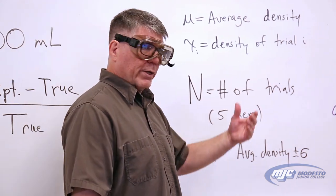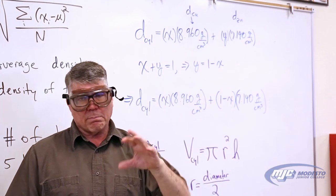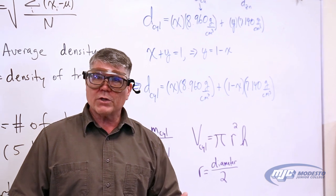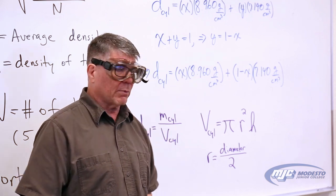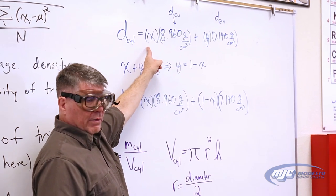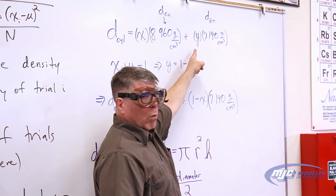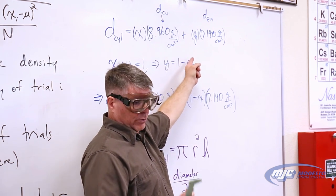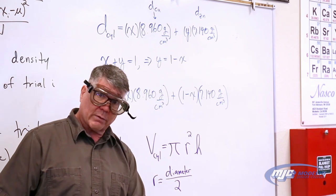If we look at these equations, the density of a mixture is equal to the fraction of each component times the density of that component. This is called a weighted average, and we use this in chemistry when we talk about the average atomic mass of different elements — it's exactly the same. The density of your cylinder is equal to the fraction that's copper, x, times the density of pure copper, plus y, which represents the fraction that's pure zinc, times the density of pure zinc. That's one equation with one unknown, so we need another equation.